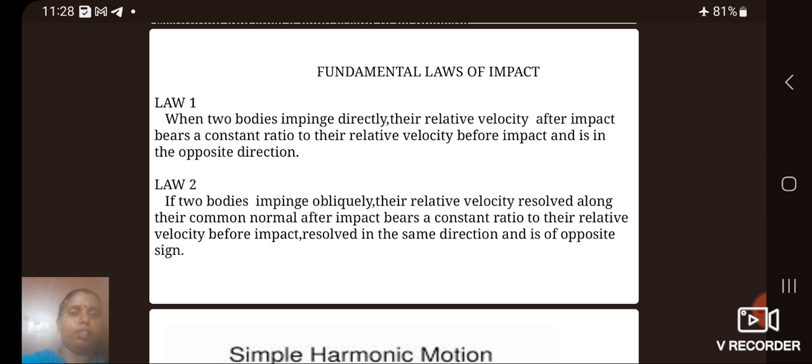Law 2: If two bodies impinge obliquely, their relative velocity resolved along their common normal after impact bears a constant ratio to their relative velocity before impact resolved in the same direction and is of opposite sign.